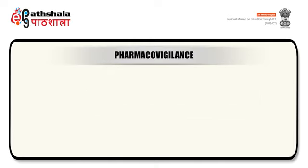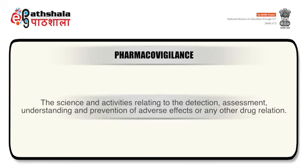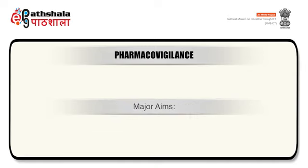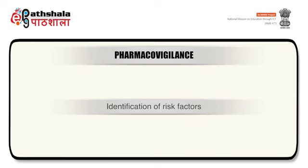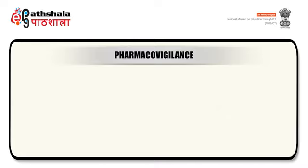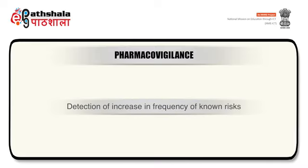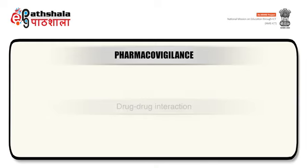Pharmacovigilance is the science and activities relating to the detection, assessment, understanding and prevention of adverse effects or any other drug-related problem. Major aims of pharmacovigilance are: early detection of unknown safety problems, identification of risk factors, quantifying risk, detection of increase in frequency of known risks, preventing patients from being affected by certain problems, and monitoring drug-drug interactions and concomitant medication.